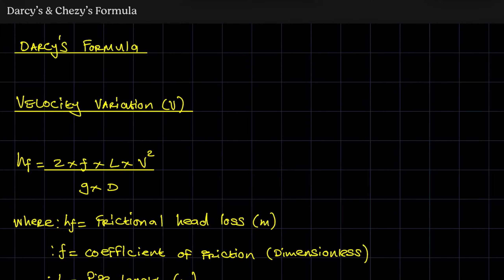Hello everyone. In this video we are going to look at the approach we take and all the formulas we use when we are looking at problems where we consider frictional losses in the pipe. The formulas we use are called Darcy's and Chezy's formula. Darcy's formula has two variations: the velocity variation and the flow rate variation.